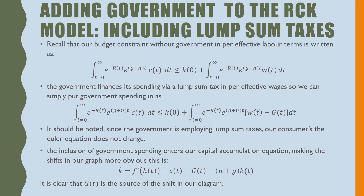It should be noted that since government is employing lump-sum taxes, our consumer's Euler equation does not change. The inclusion of government spending enters our capital accumulation equation: k-dot equals f-prime of k_t (marginal product of capital) minus consumption per effective labor, minus government spending per effective labor, minus (n plus g) times capital per effective labor. It is clear that g(t) will be the source of our shift in the diagram.